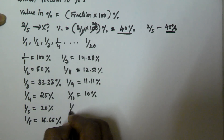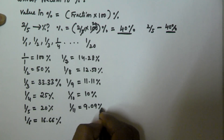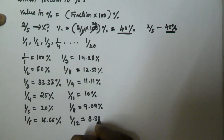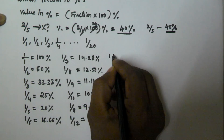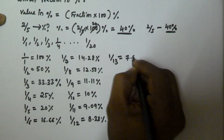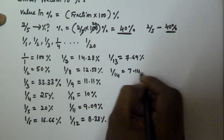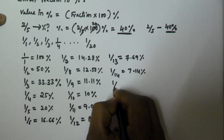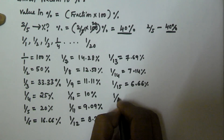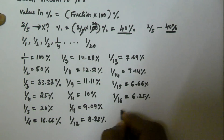1/11 is equivalent to 9.09%, 1/12 is equivalent to 8.33%, 1/13 is equivalent to 7.69%, 1/14 is equivalent to 7.14%, and 1/15 is equivalent to 6.66%.